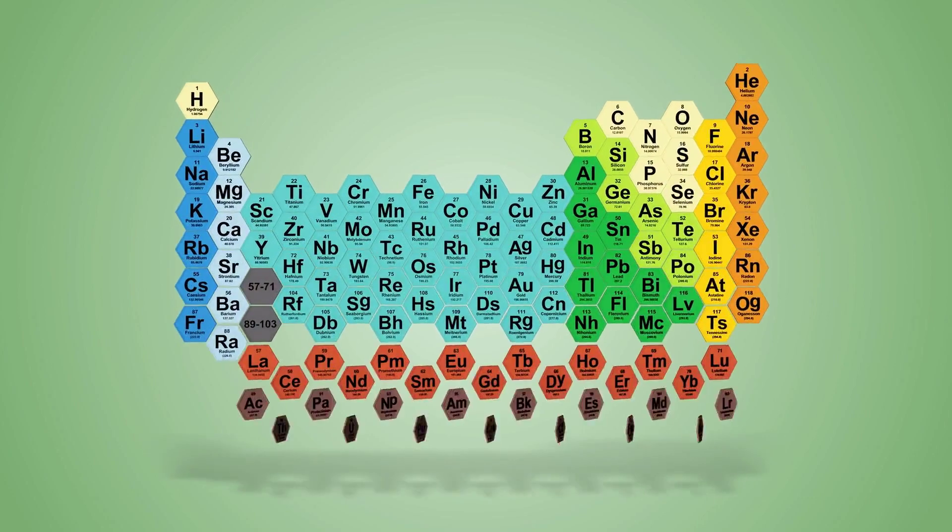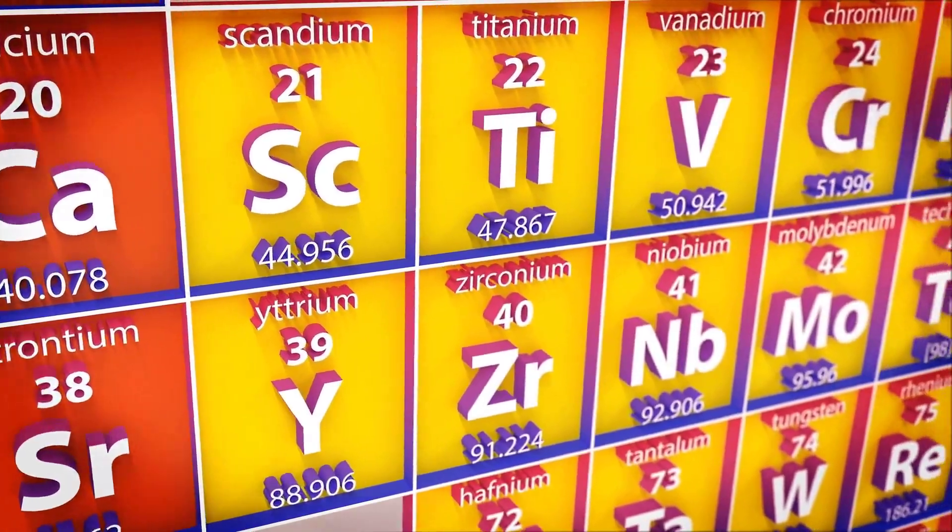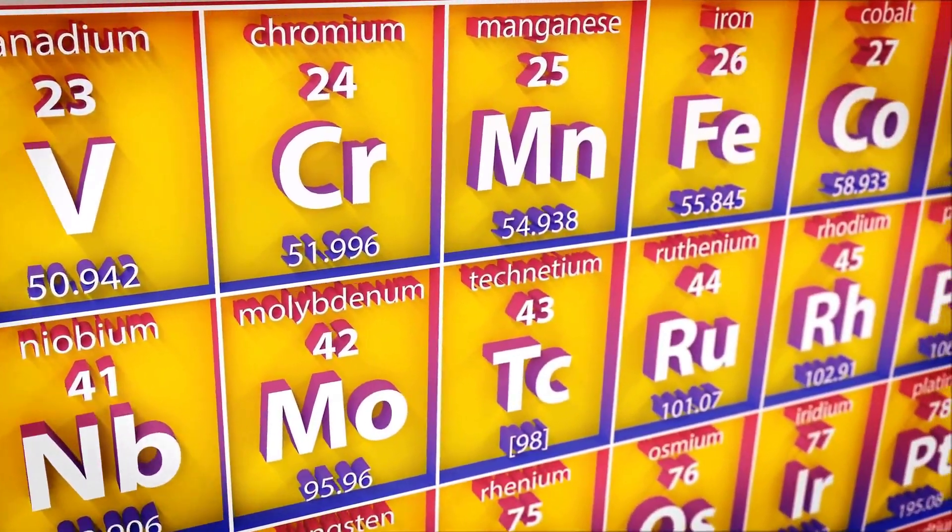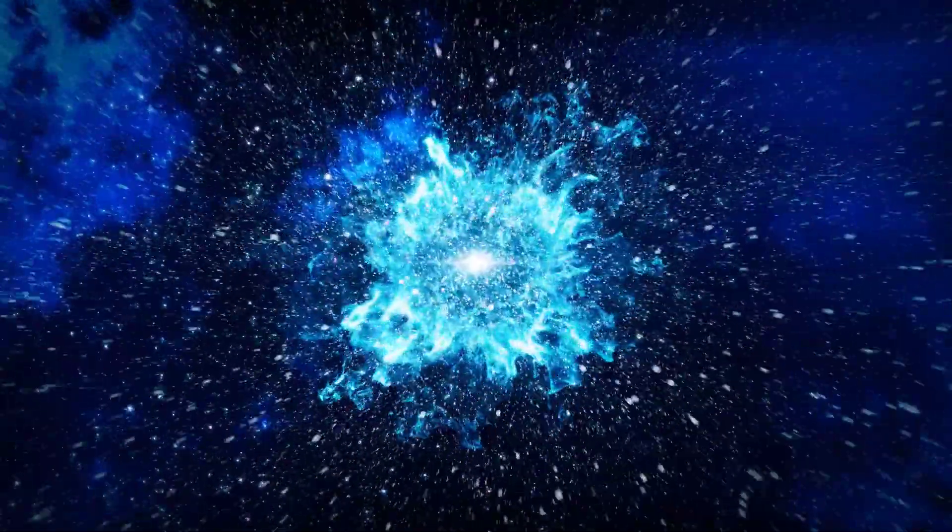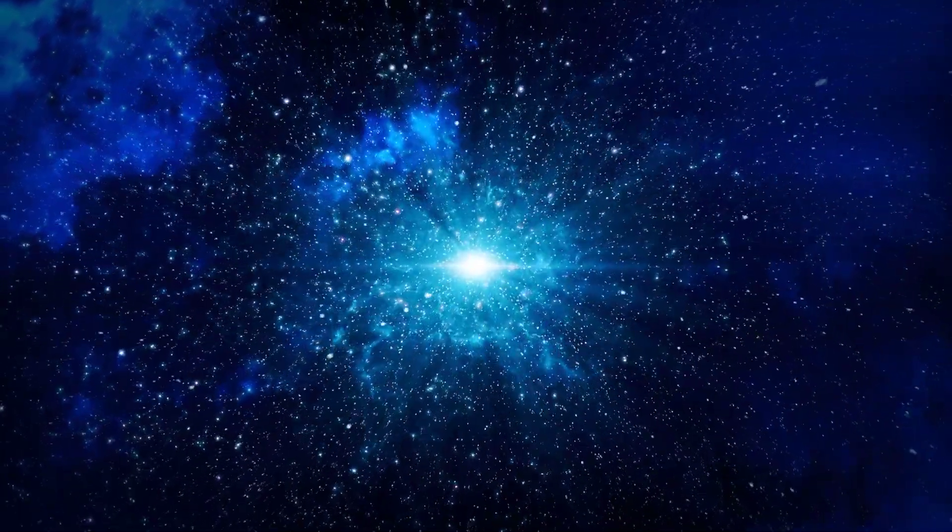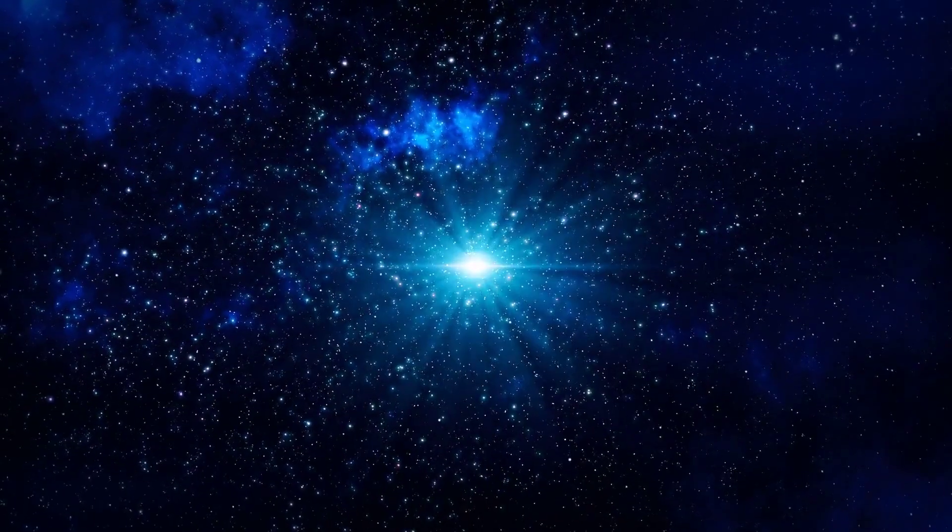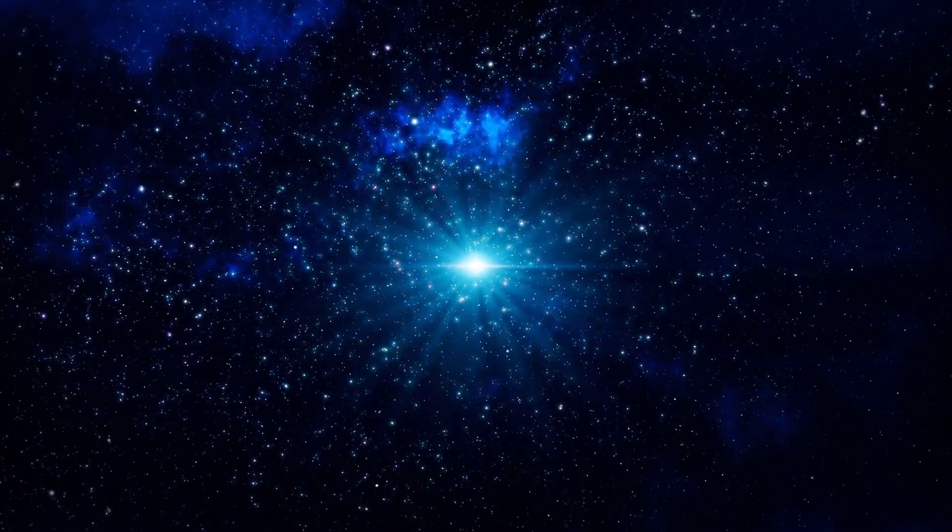The periodic table is a treasure trove of elements, each with its own unique and fascinating properties. As we progress through the table, we find the heaviest elements, with their dense, proton-rich nuclei. But how are these heavier elements formed? As we discussed earlier, stellar nucleosynthesis within stars is responsible for the formation of many of the elements we know. However, for heavier elements such as gold, platinum, and uranium, more extreme processes are required.